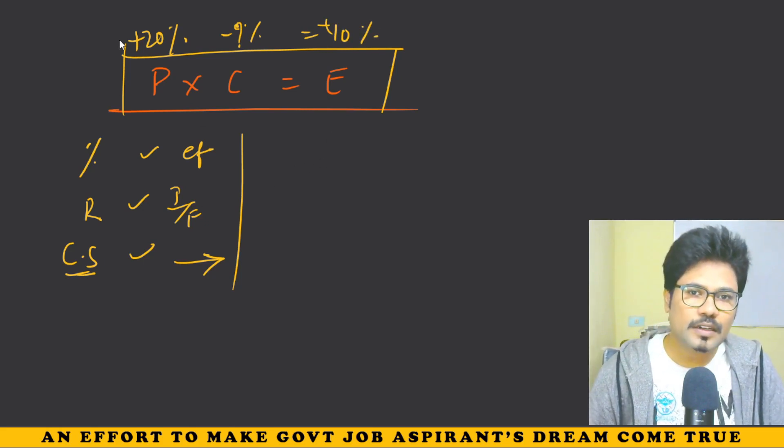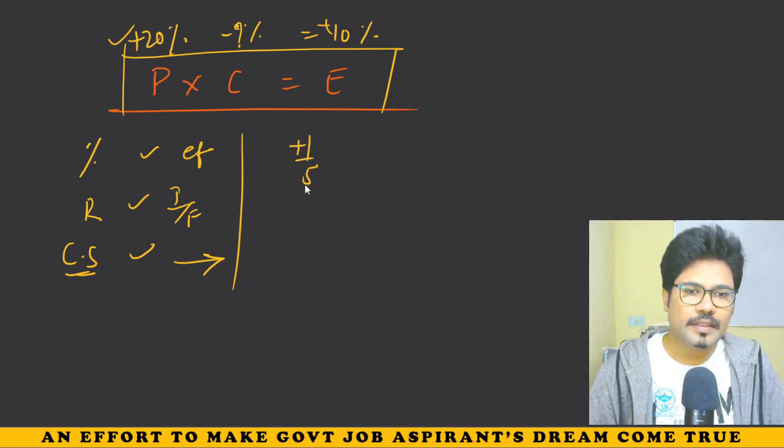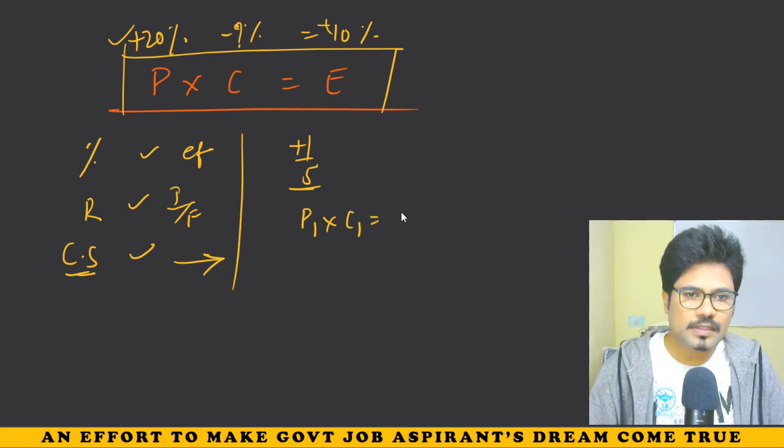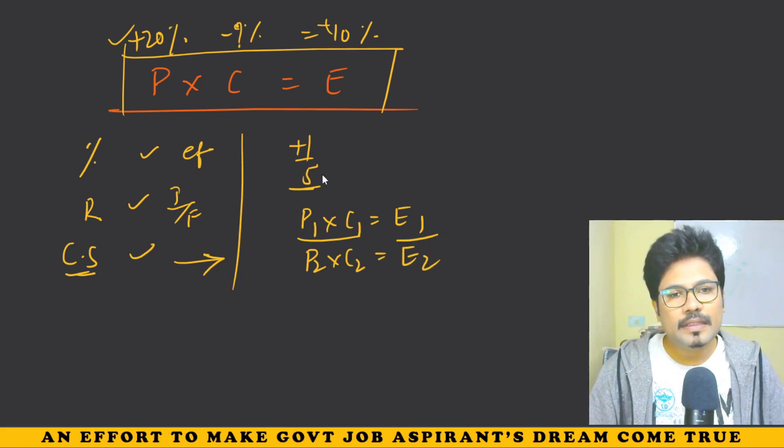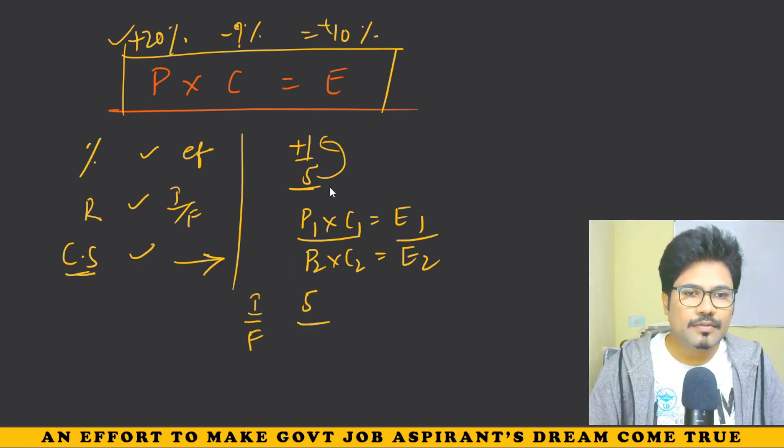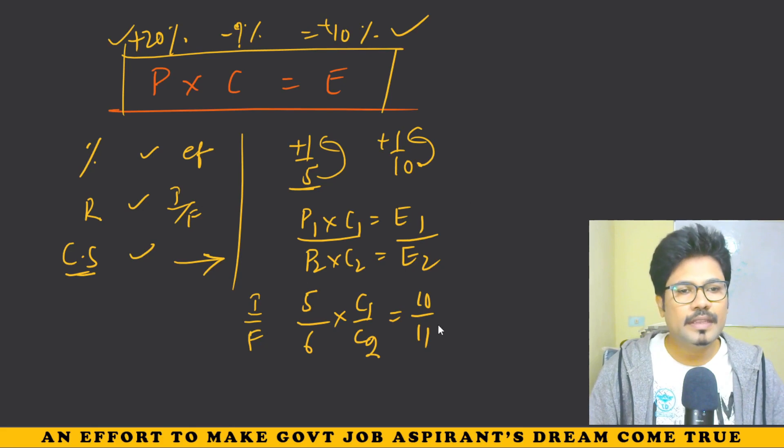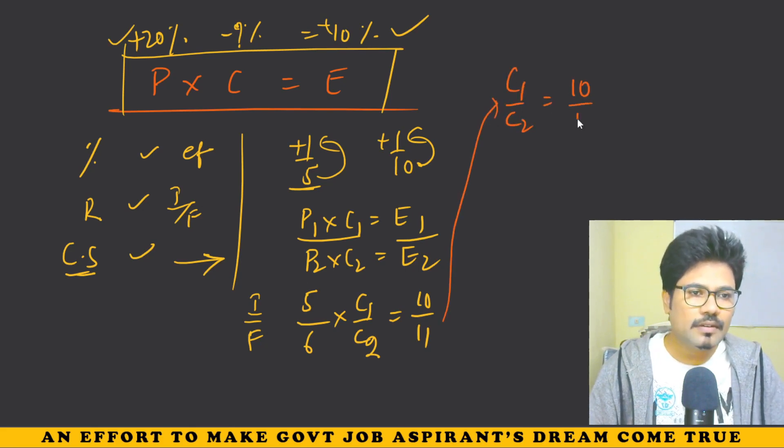So price increases 20%, which is plus 1 by 5. Write P1 by P2 into C1 by C2. Or P1 into C1 equals E1 divided by P2 into C2 equals E2. P1 to P2 is 5 to 6, initial to final. C1 by C2 equals E1 by E2. What is 10 percent? That's plus 1 by 10. So 10 to 11.